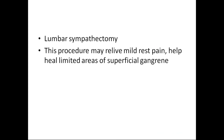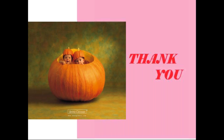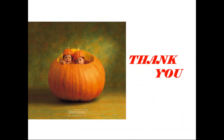Chemical sympathectomy involves injection of phenol in water at L2, L3, and L4 spaces. Lumbar sympathectomy is the surgical equivalent — an operative procedure at the same L2, L3, L4 levels where the lumbar sympathetic chain is transected. This procedure may relieve mild rest pain and help heal limited areas of superficial tissue.